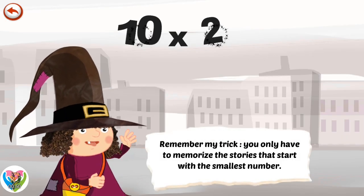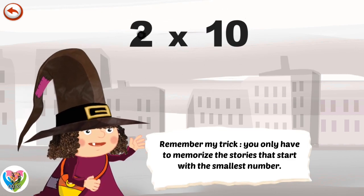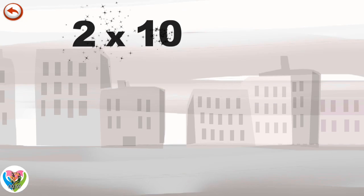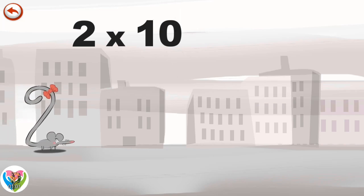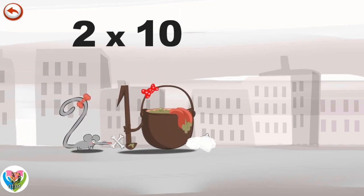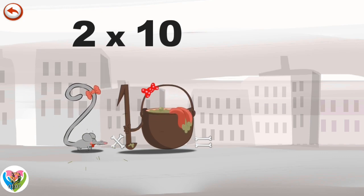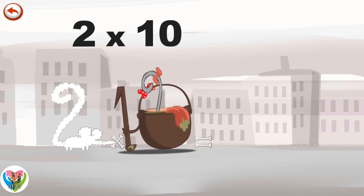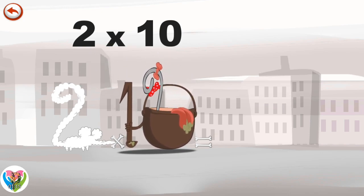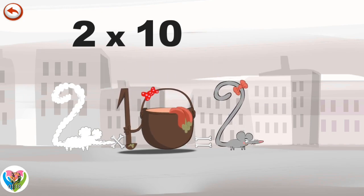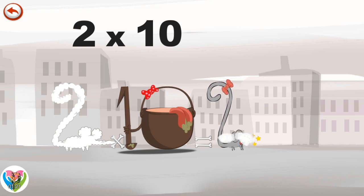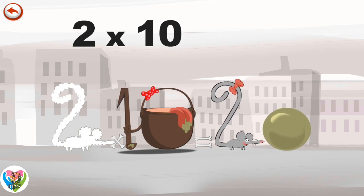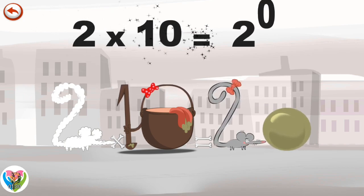Remember my trick. You only have to memorise the stories that start with the smallest number. What's the story of 2 times 10? When 2 Squeaks meets the potion Magi 10, it makes her very, very hungry. She dives headfirst into the cauldron and comes out feeling very full. She gives an enormous magic burp and blows a bubble in the shape of a zero. 2 times 10 is 20.